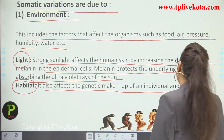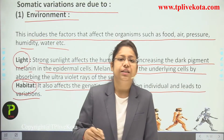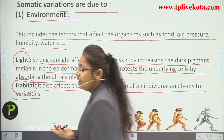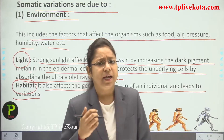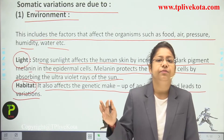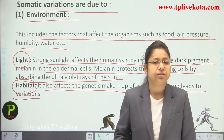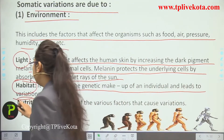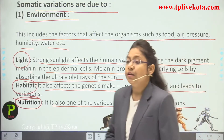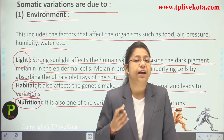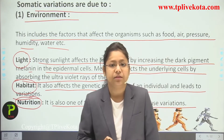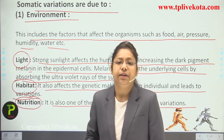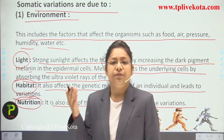Habitat also affects the individual and leads to variation — changes in the body can be seen based on the habitat. If living near an ocean or exposed to much sunlight or a dirty environment, the body develops to resist those conditions and builds a habitat to survive. Nutrition is also one of the various factors that cause variation — if the body is not getting proper nutrition, the characters transferred from parents may not develop properly, and diseases like malnutrition and vitamin deficiency can occur.